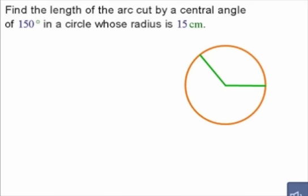So if I label the information, this side will become 15 centimeters, both radiuses are. And the central angle here, from here to here, is 150 degrees.